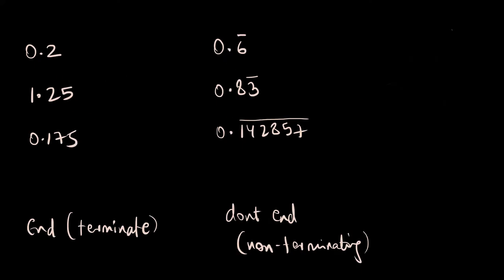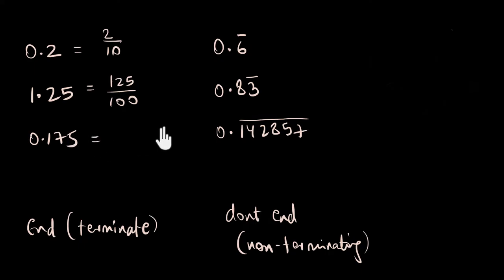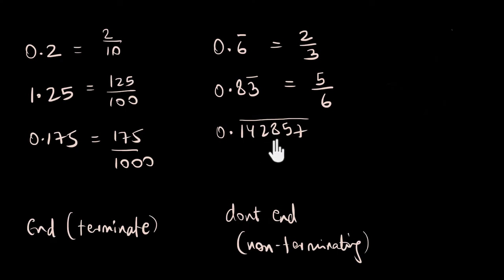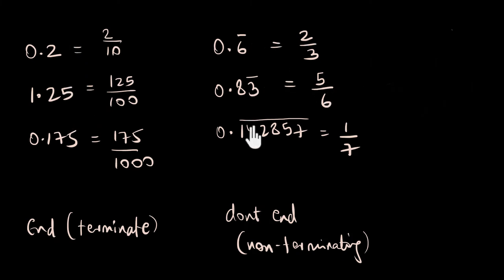Now let's write the fractional form of each decimal. 0.2 is 2 by 10, 1.25 is 125 by 100, and 0.175 is 175 by 1000. Using a calculator: 0.6 bar is 2 thirds, 0.83 bar is 5 sixths, and 0.142857 repeating is 1 seventh. So here are fractions giving terminating decimals and fractions giving non-terminating decimals. Can we see a pattern?